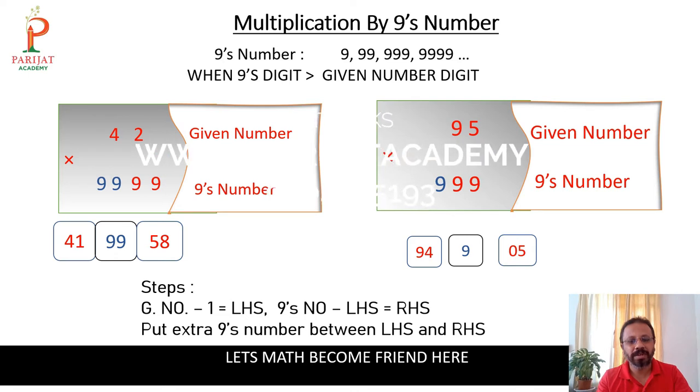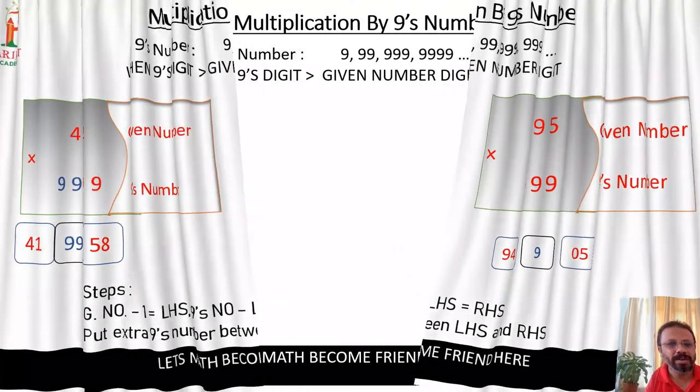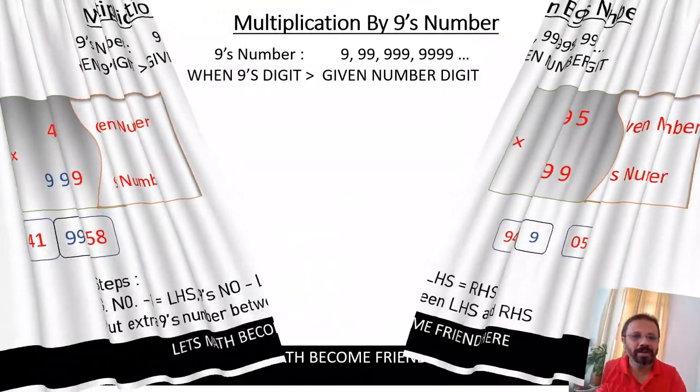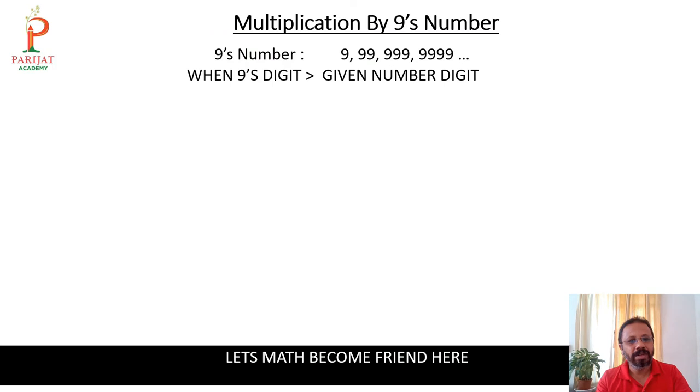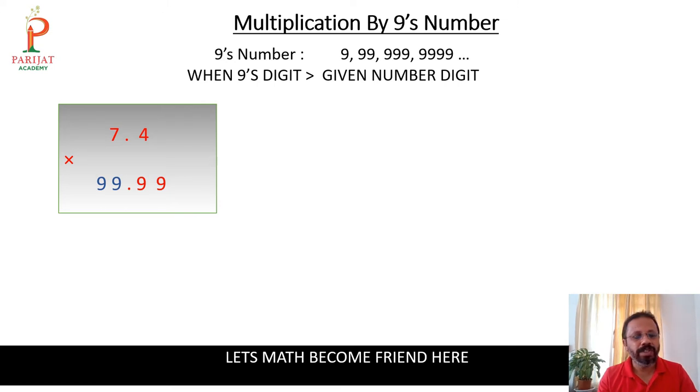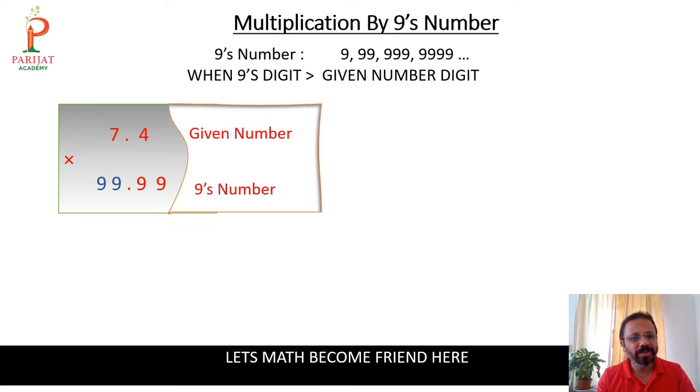Here we will go with one another example. Here some decimal points: 7.4 times 99.99. So here what we will do, first forget decimal and consider only simple multiplication like 74 times 9999. So first 74 minus 1 which will be 73.